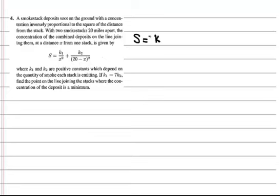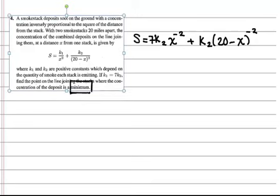So in this problem, we have a smokestack depositing soot on the ground with the concentration inversely proportioned to the square of the distance from the stack. And so we've got two smokestacks which are 20 miles apart, and we're trying to find where the concentration s is a minimum.